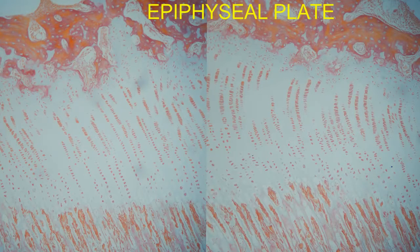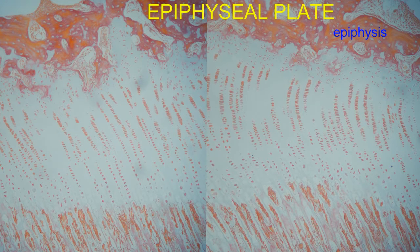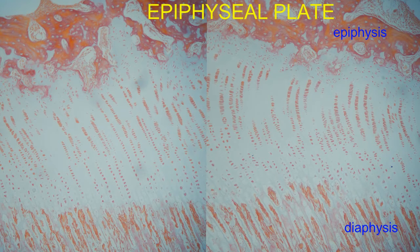While bones can increase in width through appositional growth, bones which increase in length do so at a band of cartilage known as the epiphyseal plate, between the bone in the epiphysis and diaphysis. Additional cartilage can be laid down on the diaphysis side of this epiphyseal plate, which is then converted to bone.